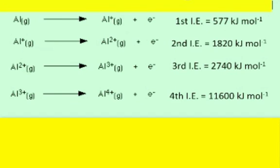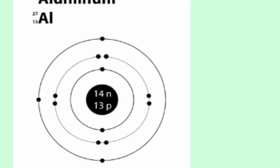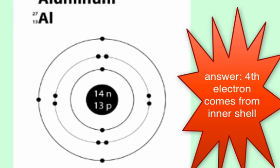Did you also consider the extension: why is the fourth ionisation energy so much larger than the third? If you talked about shells of electrons, well done — you've already anticipated what we're doing next.